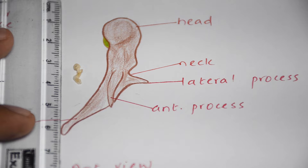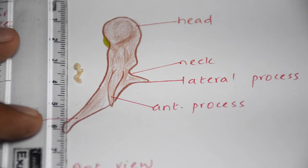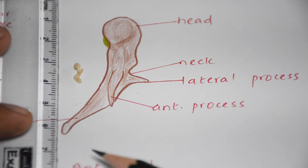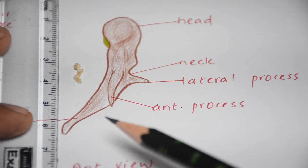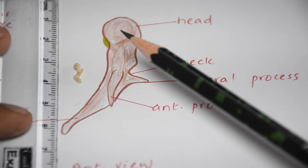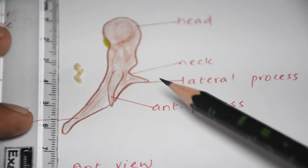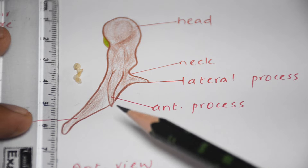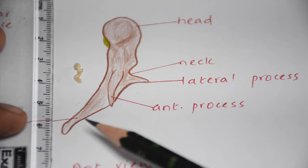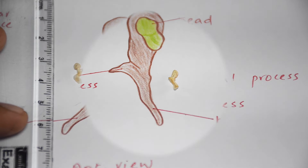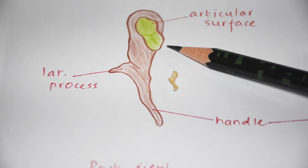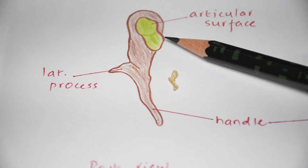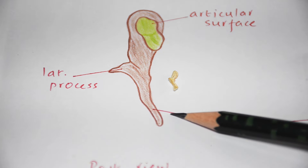This is the left malleus — you can correlate its size with the scale. In this diagram it shows the left malleus in anterior view with its different parts: a globular head, a constricted neck, a lateral process, an anterior process, and a large handle or manubrium. This is the posterior view showing the head with an articular surface which articulates with the incus.